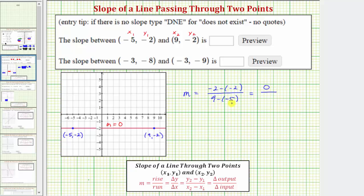And nine minus negative five equals nine plus five, which equals fourteen. And zero divided by fourteen is equal to zero. So the slope of the line passing through these first two points is equal to zero.